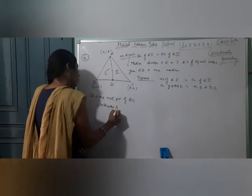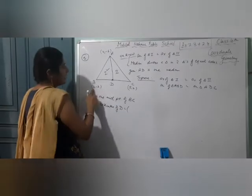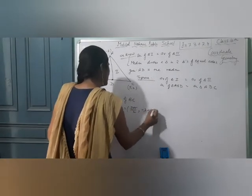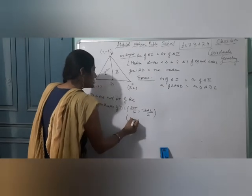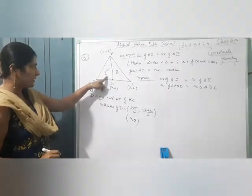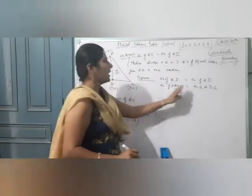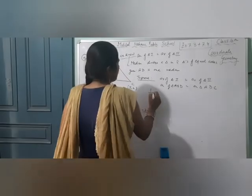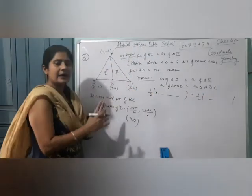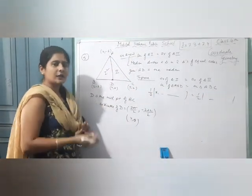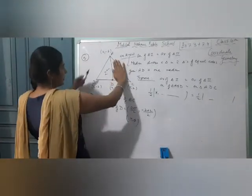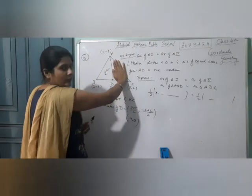D is the midpoint of BC. Therefore, coordinates of D by midpoint formula: (3+5)/2 and (-2+2)/2, that is (4, 0). So D ke coordinates aa chuke hain: 4 and 0. After this, calculate the area of both triangles separately using the area formula, and verify that both areas are equal.